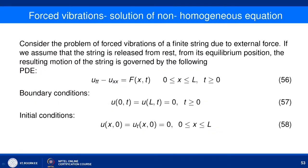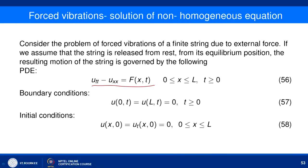We consider the problem of forced vibration of a finite string due to an external force. Assuming the string is released from rest at its equilibrium position, the resulting motion is governed by u_tt - u_xx = f. The boundary conditions are u(0,t) = u(L,t) = 0, and the initial conditions are u(x,0) = 0 and u_t(x,0) = 0.